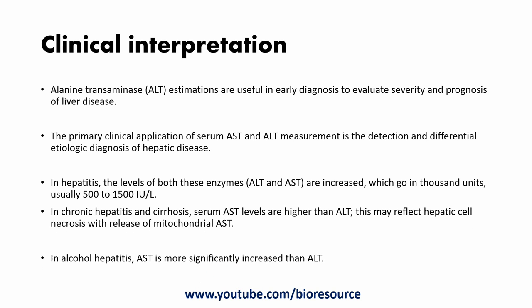For clinical interpretation: ALT estimations are useful in early diagnosis to evaluate the severity and prognosis of liver disease. The primary clinical application of serum AST and ALT measurement is for the detection and differential etiological diagnosis of hepatitis. In hepatitis, levels of both ALT and AST are increased and can reach into the thousands of units, usually from 500 to 1500 IU per liter. In chronic hepatitis and cirrhosis, serum AST levels are higher than ALT, which may reflect hepatic cell necrosis with release of mitochondrial AST. In alcoholic hepatitis, AST is more significantly increased than ALT.